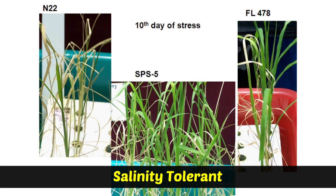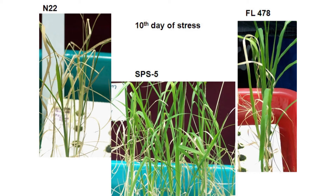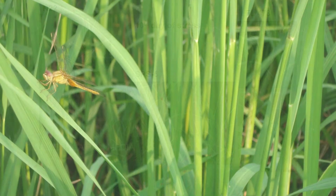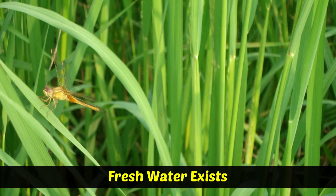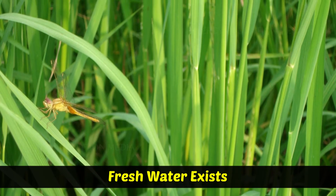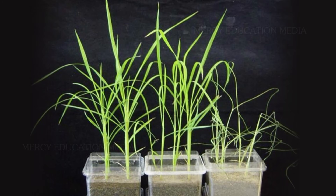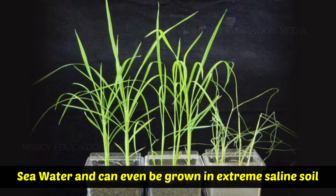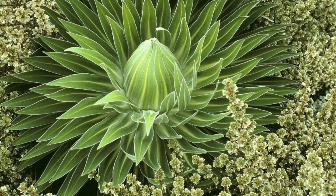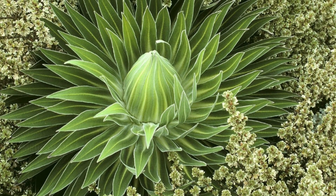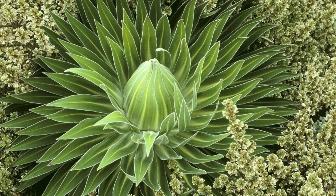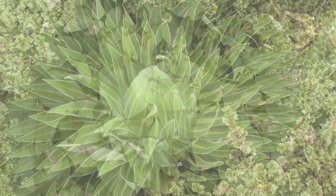Through gene manipulation, the gene for salinity tolerance could be cloned in a rice variety. In areas where shortage of fresh water exists, rice can be cultivated using sea water and can even be grown in extreme saline soil. Similarly, we need many more such wild plants showing increased capacity to extremes of climatic conditions.